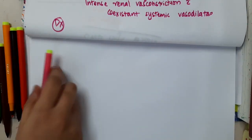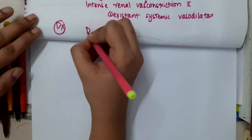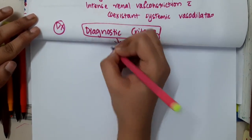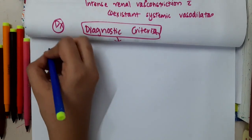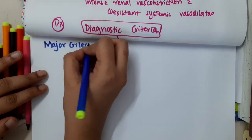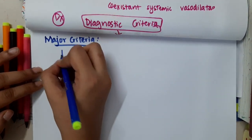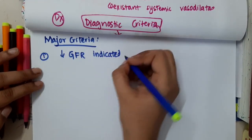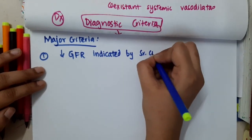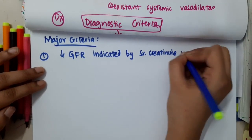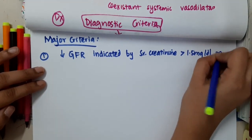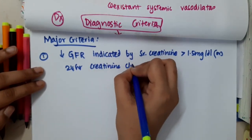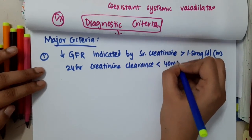Looking at the diagnosis of hepatorenal syndrome, we have diagnostic criteria. First, the major criteria: there will be decreased glomerular filtration rate, indicated by serum creatinine greater than 1.5 mg per deciliter, or 24-hour creatinine clearance less than 40 ml per minute.